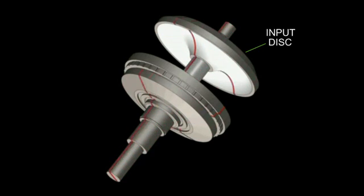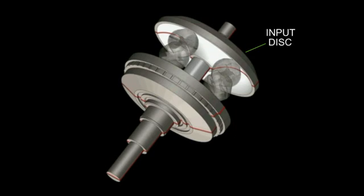When the input shaft is rotated, both the input disc and the clamping plate rotate at the same speed. The output disc will not rotate until the rollers are clamped between it and the input disc.